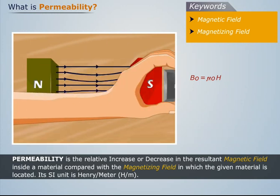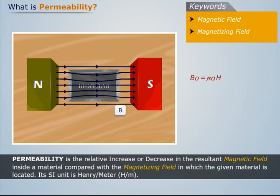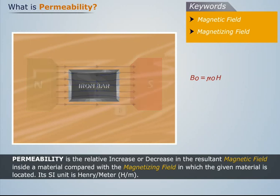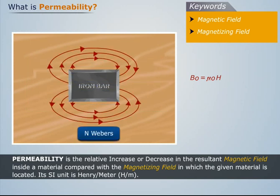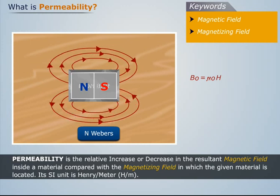Now, if we place an iron bar in this field, we see that it gets magnetized by induction. Let's assume that the induced pole strength in the iron bar is N Webers. We see that a flux of N Weber originates from the north pole of the magnet. It then re-enters its south pole and continues to flow from the south pole to the north pole within the magnet.